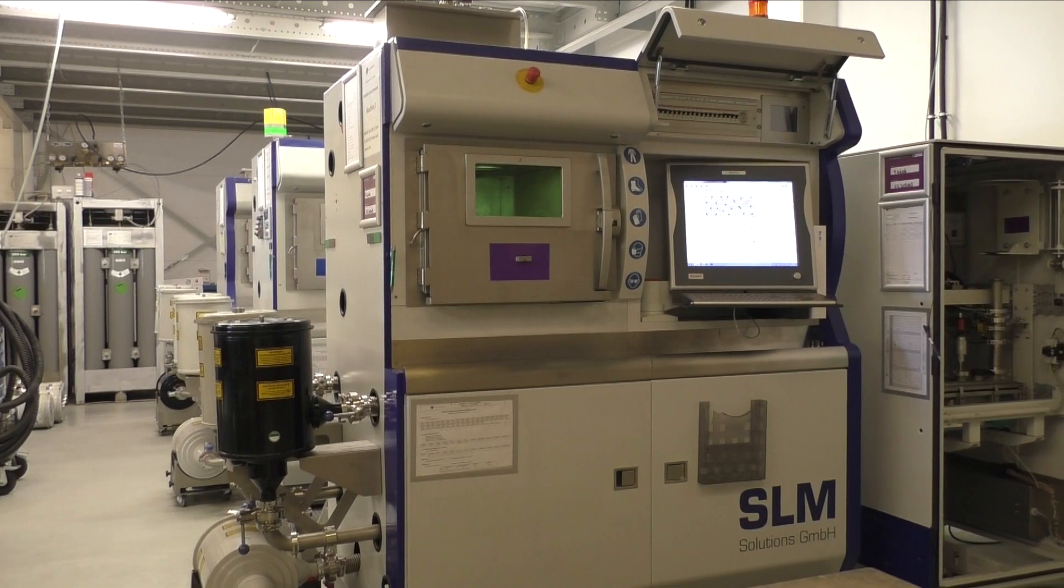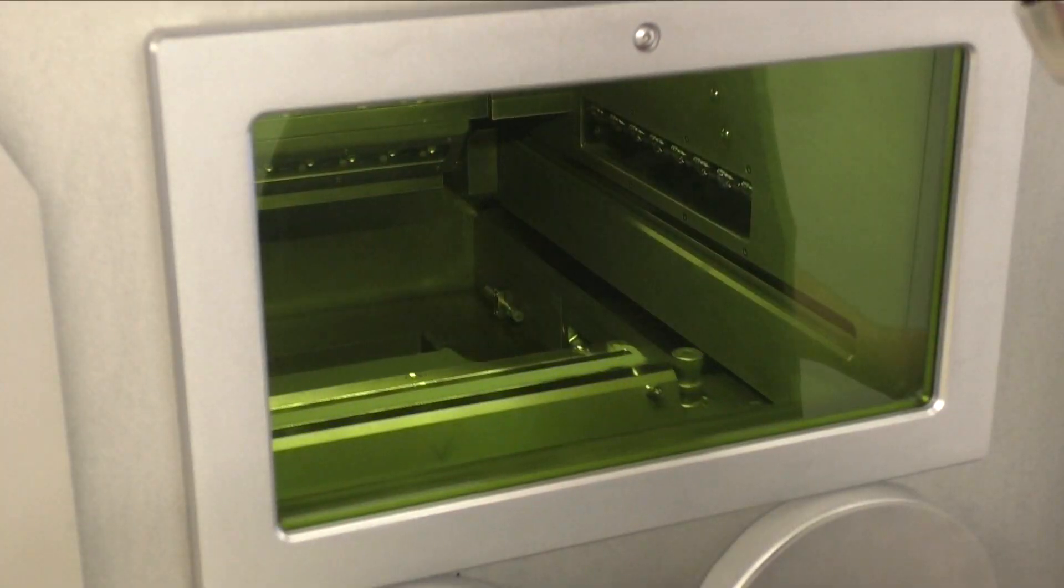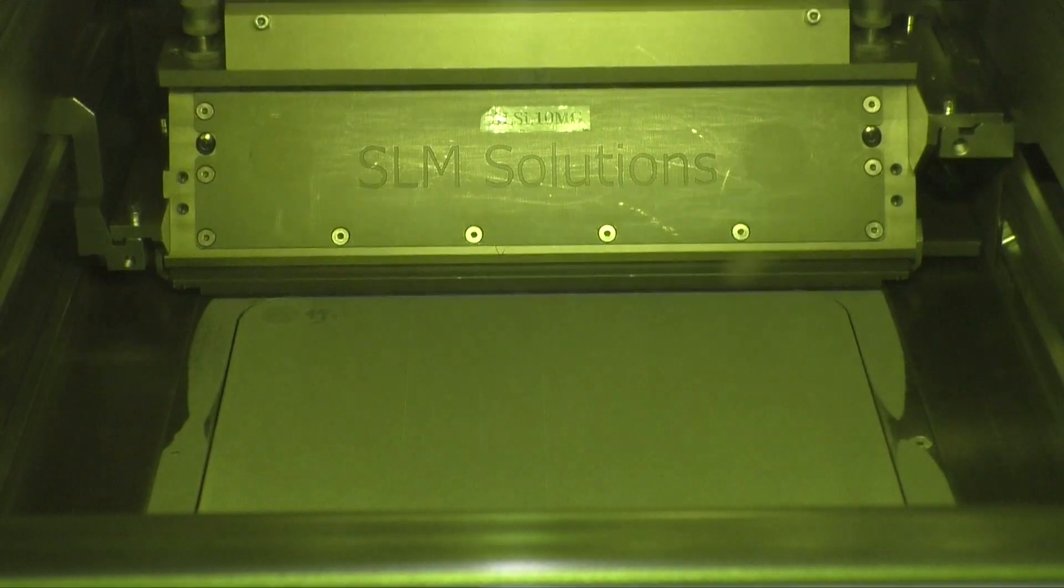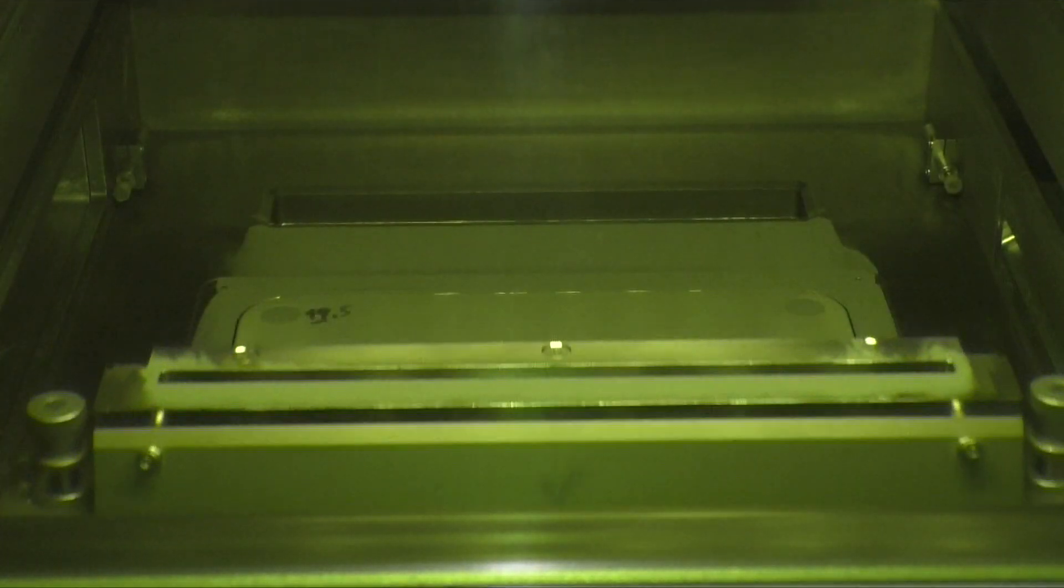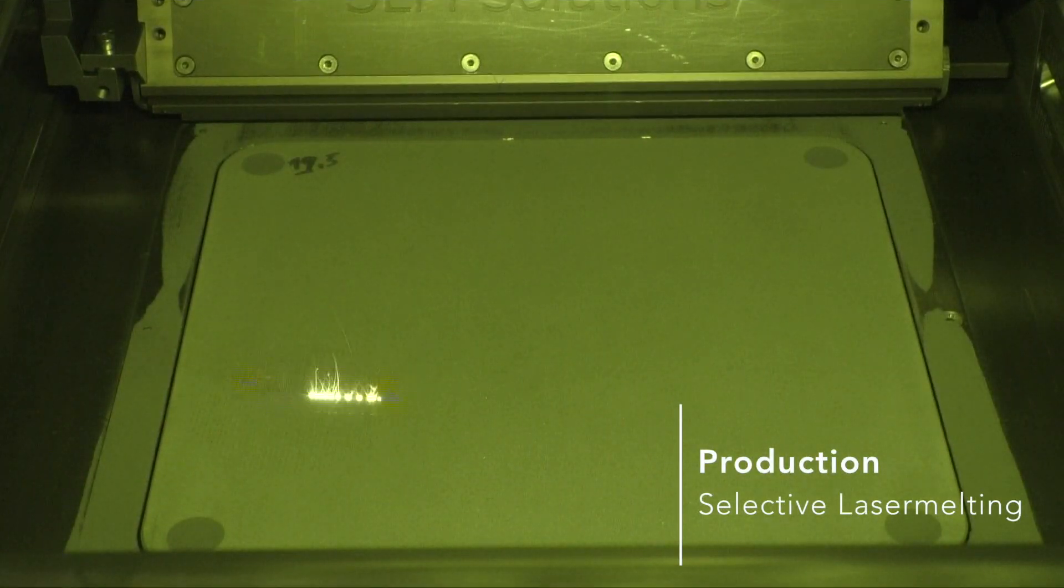The laser powder bed fusion process gives us the possibility to build functional parts with good mechanical properties that are comparable to conventional types of production. Up to two lasers let your parts grow in the powder bed layer by layer with a layer thickness between 30 and 100 micrometers.